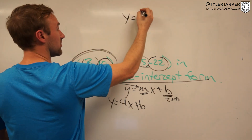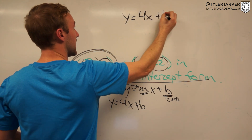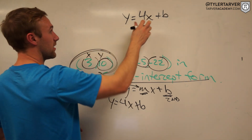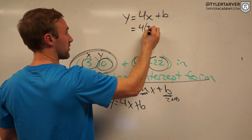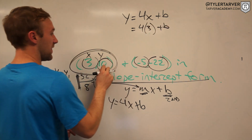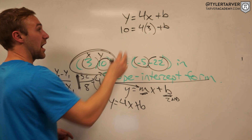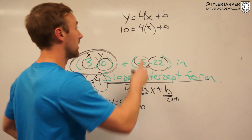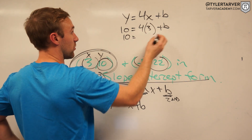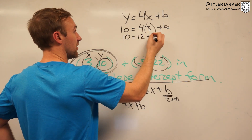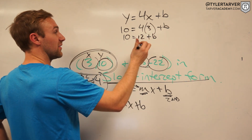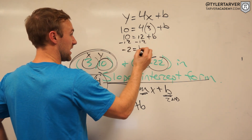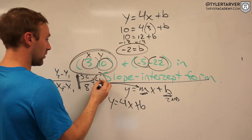I've got y equals 4x plus b. I'm going to plug in x equals 3 and y equals 10. So it becomes 10 equals 4 times 3 plus b. This just turned into a little multi-step equation: 10 equals 12 plus b.